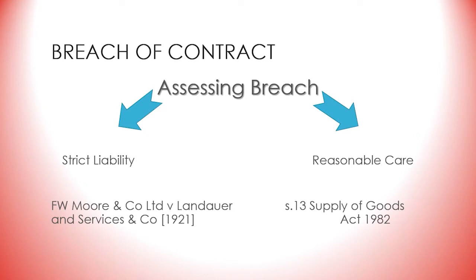How does one define acceptable contractual performance? It is assessed objectively using two standards: strict liability and reasonable care. Under strict liability, if a contract stipulates that the party guarantees a particular result or to bring about a particular state of affairs, if performance falls short of that stipulated standard there is a breach — even if it is not the fault of the party. It is important to remember that one is not looking for moral culpability, intention, or fault.